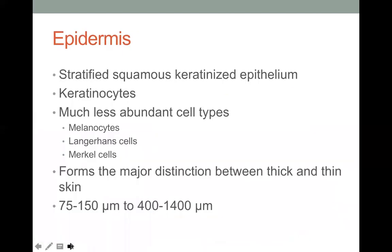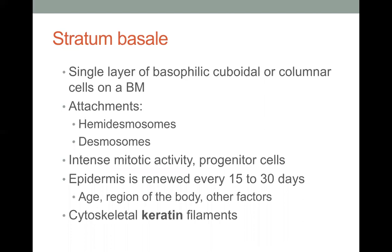The lining epithelium of the epidermis is stratified squamous keratinized epithelium. Keratinocytes are the parenchyma — the characteristic cells of the epidermis. Less abundant cell types include melanocytes, Langerhans cells, and Merkel cells. The epidermis forms the major distinction between thick and thin skin, with the presence of the stratum lucidum layer being the key differentiating feature.